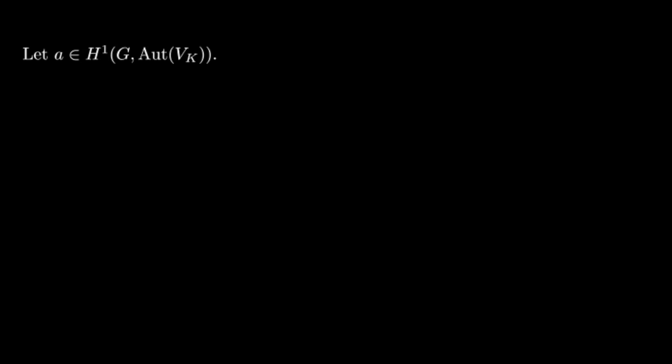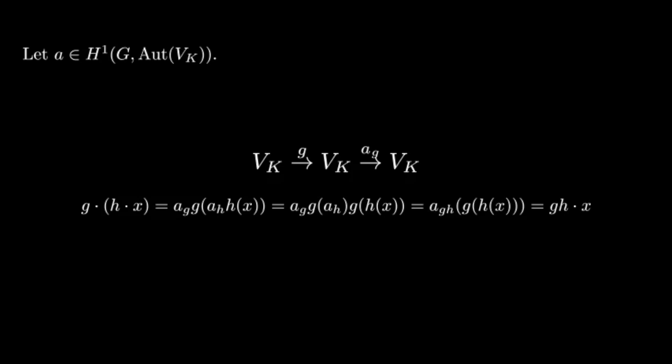So, given a in H^1, how do we get an F-vector space W, such that V_K is isomorphic to W_K? Notice that since a is a crossed homomorphism from G to the automorphisms of V_K, each g induces an automorphism of V_K, so that we have a diagram like this. These maps only depend on g, and so one can check that this defines a new G-action on V_K. As we can see, we did need this crossed homomorphism structure to have this be a G-action. Now, call V_K equipped with this action as like a_V_K.